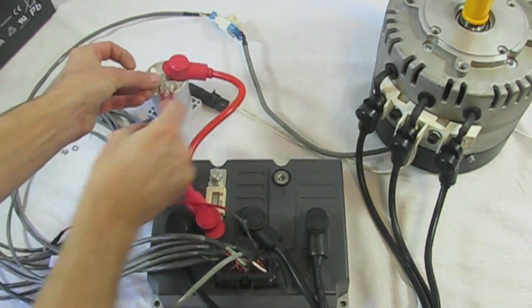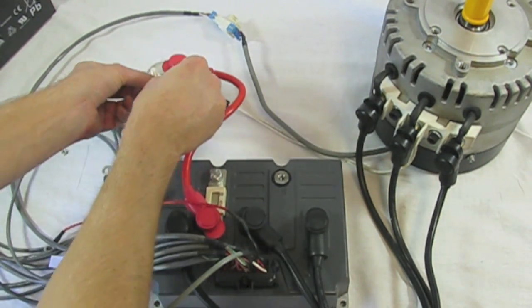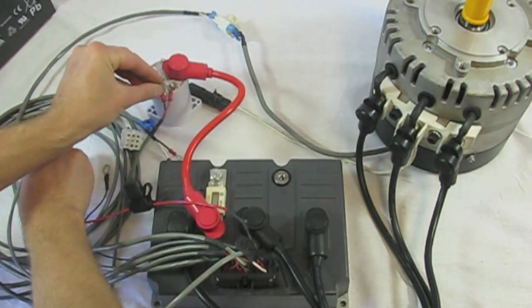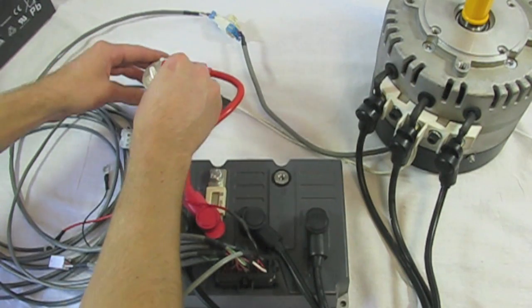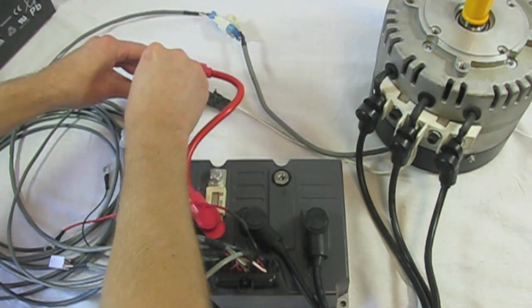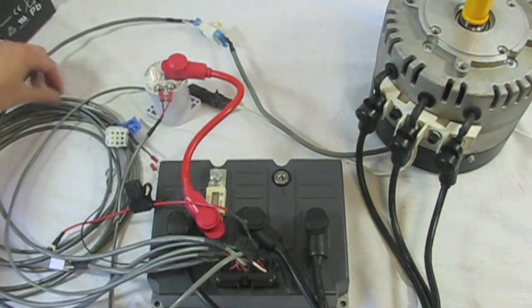The two small ring terminals, we'll put those on the contactor. They are not polarity sensitive so it doesn't matter which one gets black which one gets red but you do want to make sure you put the wire on first and then the washer lock washer and nut in that order.